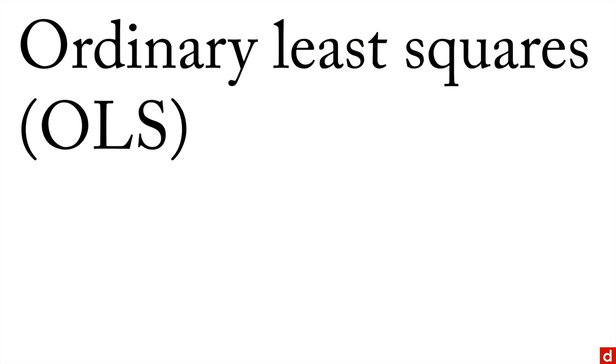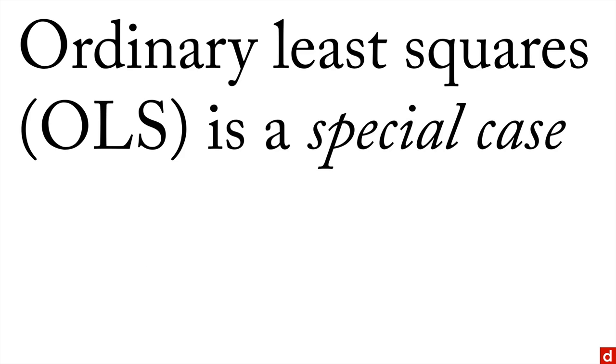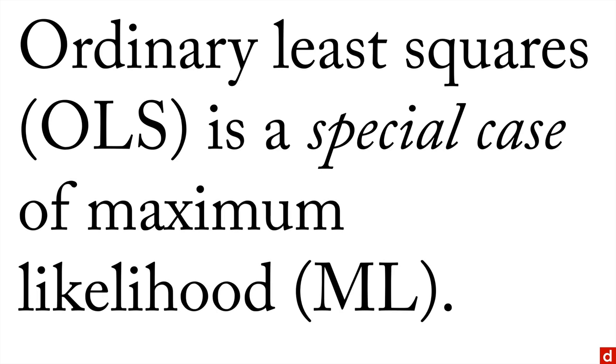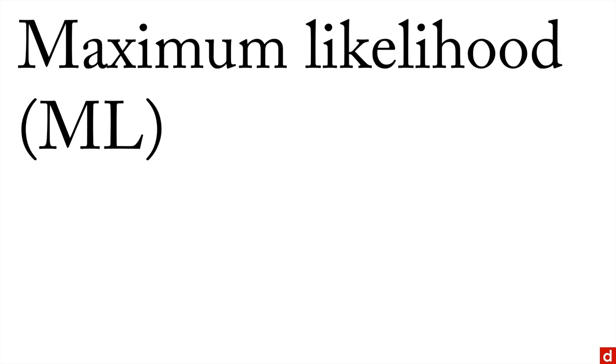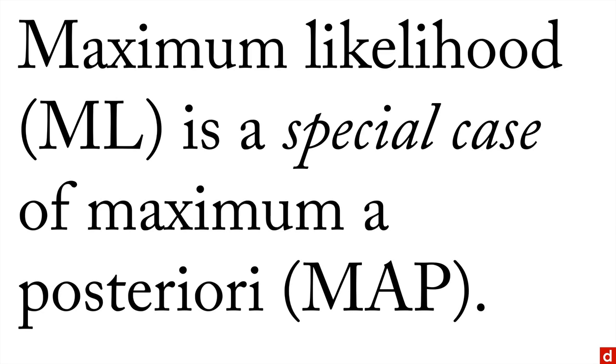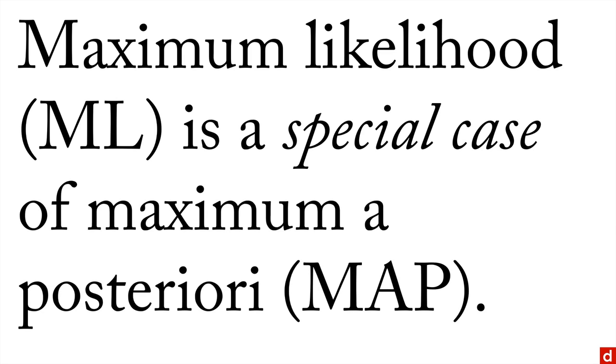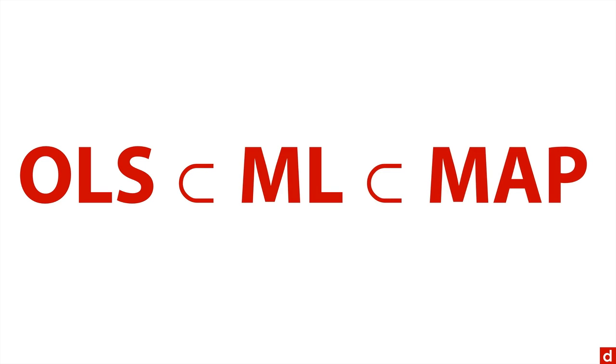You want to put it another way, ordinary least squares or OLS is a special case of maximum likelihood. And then maximum likelihood or ML is a special case of maximum a posteriori. And just in case you like it, we can put it in set notation. OLS is a subset of ML is a subset of MAP. And so there are connections between these three methods of estimating population parameters.